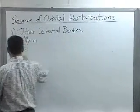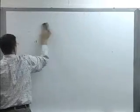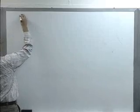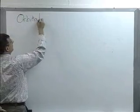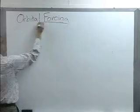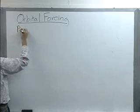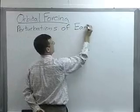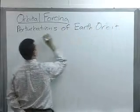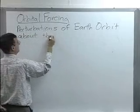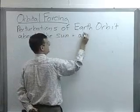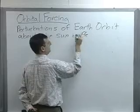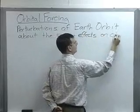To summarize some of these forces and get our terminology down: orbital forcing is the study of perturbations of Earth's orbit about the Sun, and the effects on the Earth's climate.